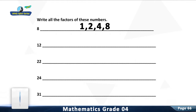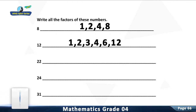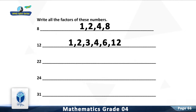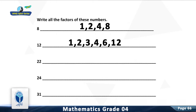Question 2: Write all the factors of 12. You are right. The factors of 12 are 1, 2, 3, 4, 6, and 12.